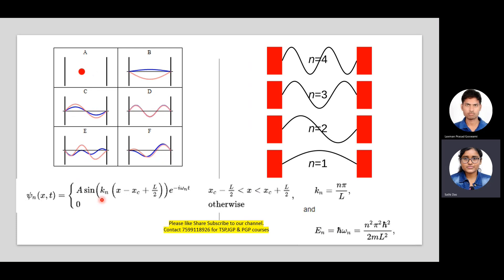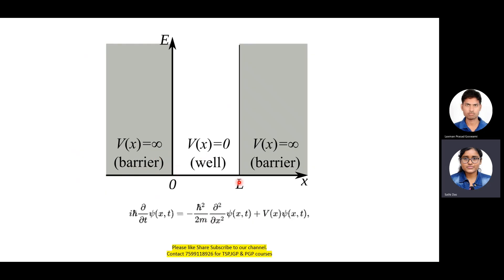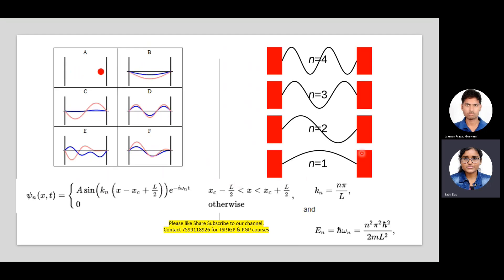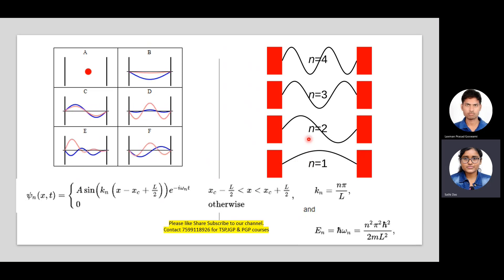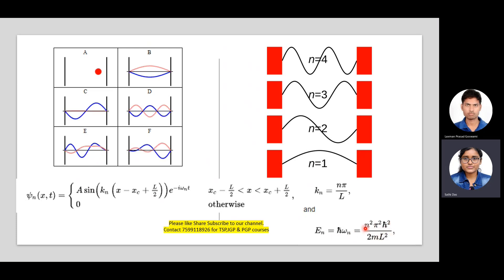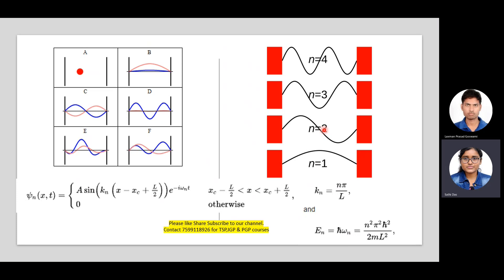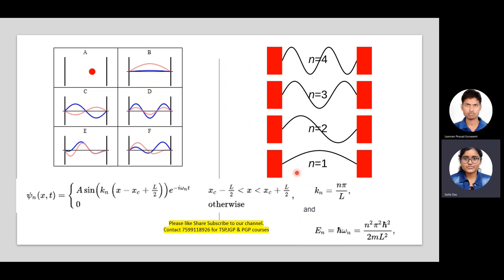The quantum number n starts from 1; n = 0 is not allowed because the sine term would be zero, giving a trivial solution. Negative values like n = −1, −2, −3 are also not counted separately because squaring them gives the same energies as the positive values. The energy levels are E_n = n²π²ℏ²/(2mL²), so we only need to count n = 1, 2, 3, giving discrete energy levels.